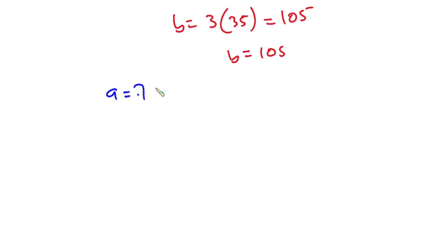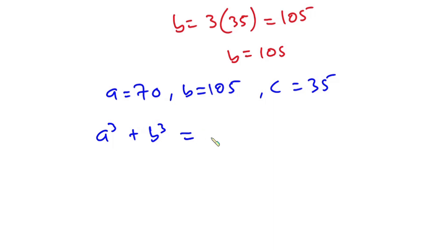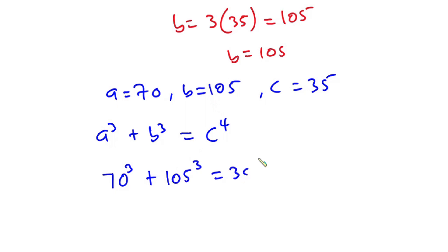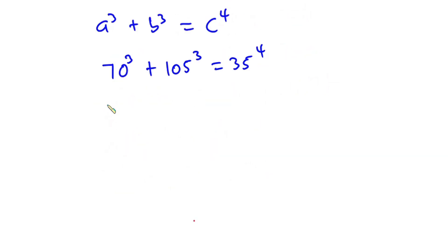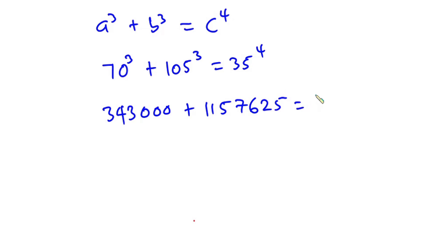So we have a equal to 70, b equal to 105, and c equal to 35. Let's plug these values into the original equation: a to the third power plus b to the third power equals c to the fourth power. So 70 to the third power plus 105 to the third power equals 35 to the fourth power. 70 to the third power is 343,000, plus 105 to the third power is 1,157,625, and 35 to the fourth power is 1,500,625.